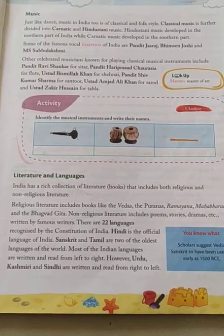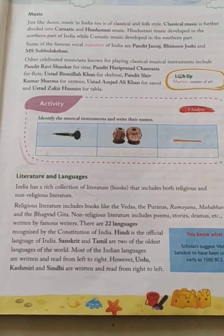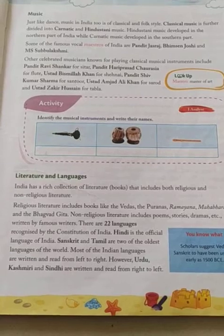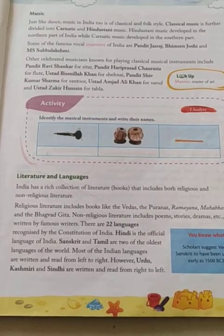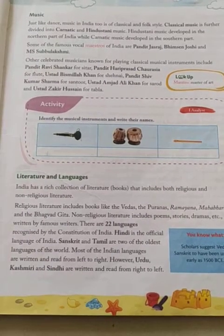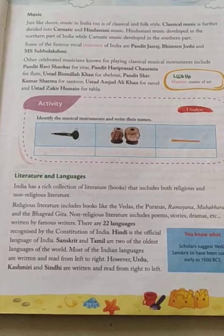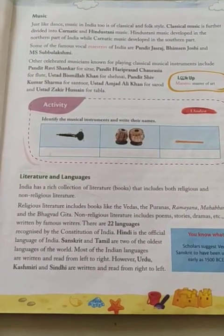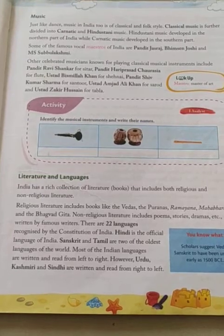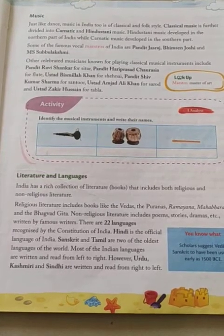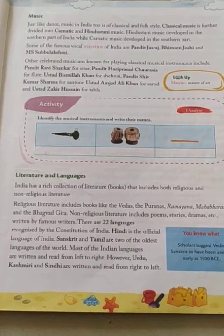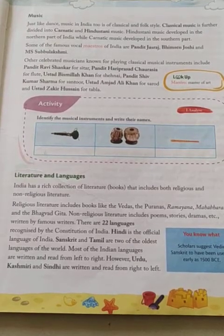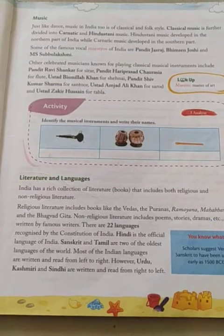Hindustani music developed in the northern part of India while Karnatak music developed in the southern part of India. Some of the famous vocal masters of India are Pandit Jasraj, Bhimsen Joshi, and M.S. Subbulakshmi. These are the famous classical singers.